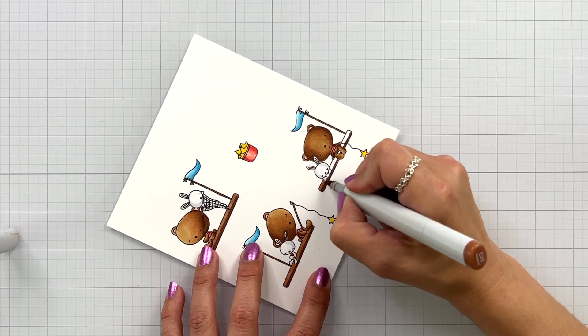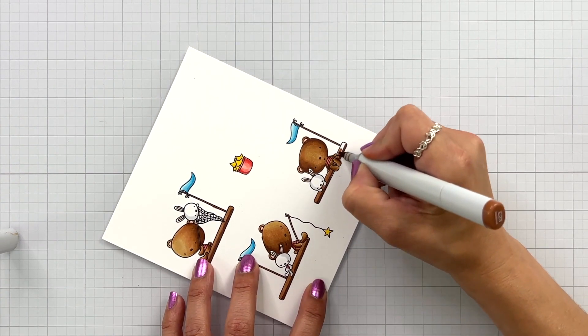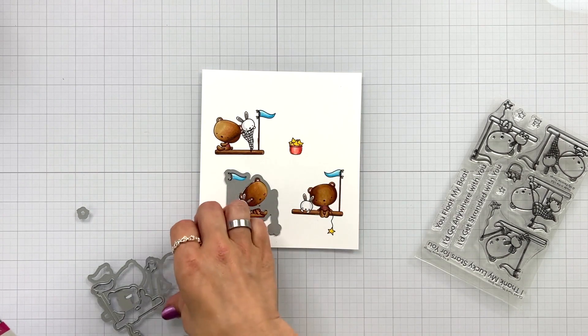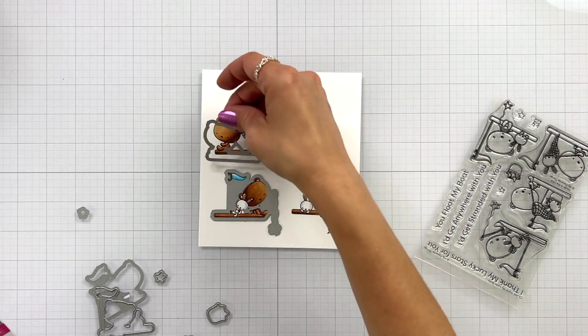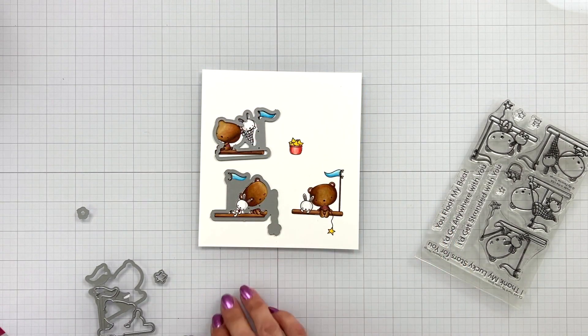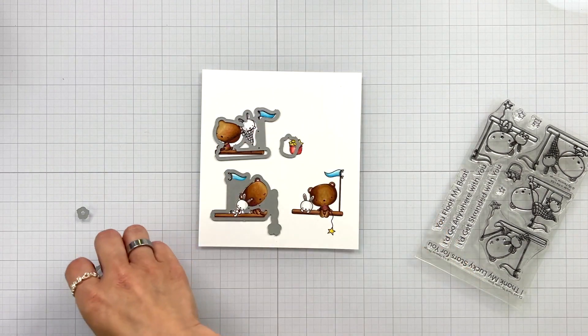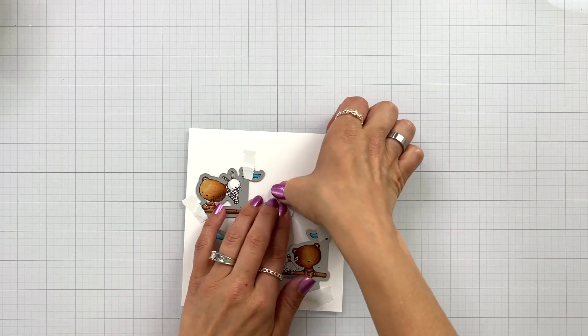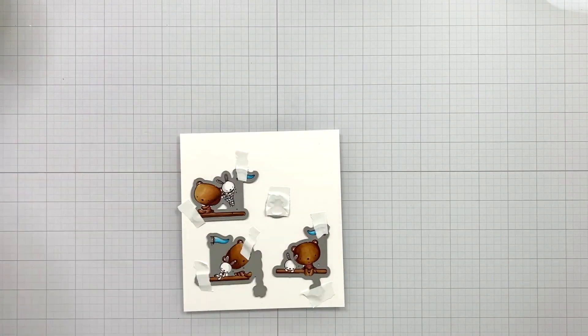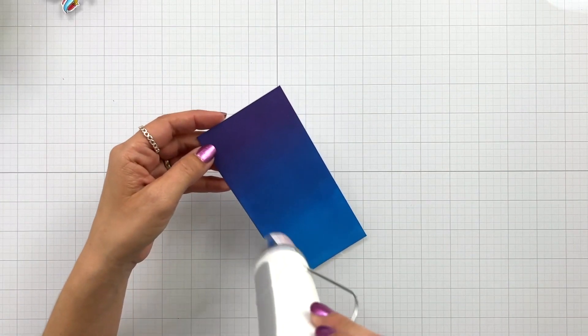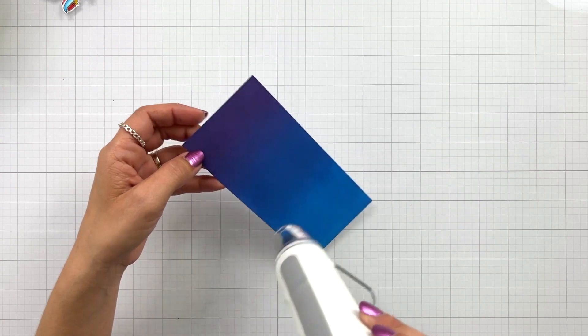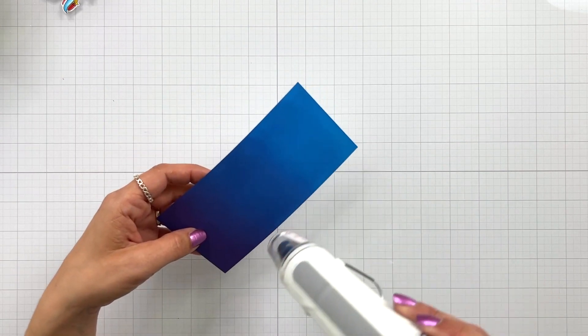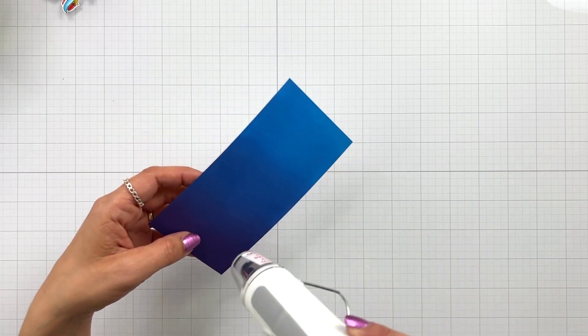Now I'm going to bring in the coordinating dies for these images. These might look a little bit different because they're going to cut out all of those little areas in between the critters and the flag which I thought was really cool. So I held all of those down with posted tape and set those off on the side after I die cut them.